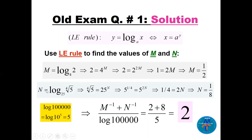For N: log base 25 of the fourth root of 5 equals N. Using the LE rule, the fourth root of 5 equals 25 to the power N. That is 5 to the one-quarter equals 5 squared to the power N, so one quarter equals 2N, giving N equals one eighth. Then M to the minus one is 2 and N to the minus one is 8, so M⁻¹ + N⁻¹ = 10. Since log base 10 of 100,000 equals 5, the answer is 10 over 5 which is 2.